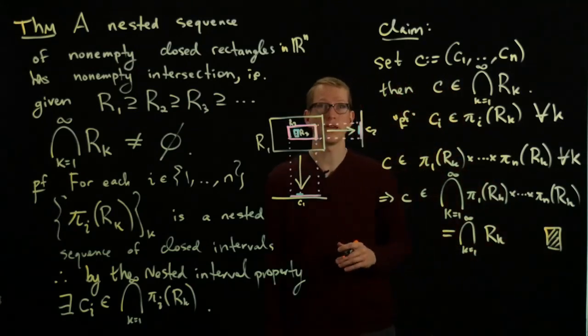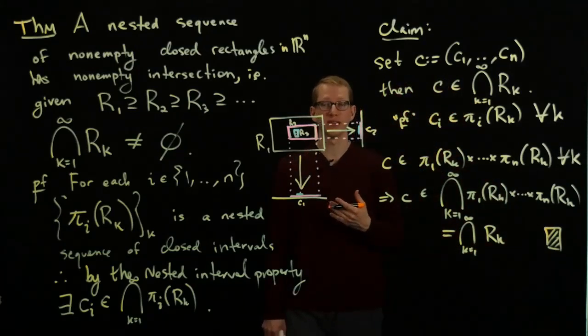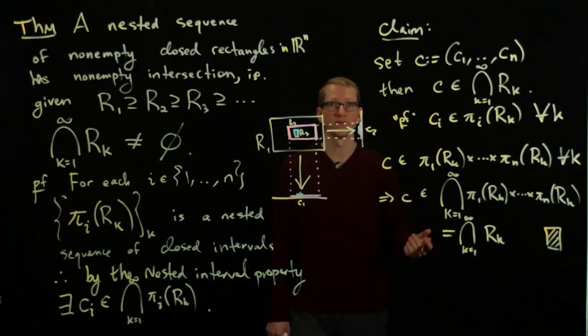That's the end of the proof and it shows that the nested interval property has a natural generalization for any dimension.